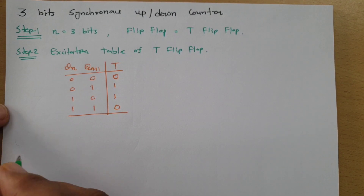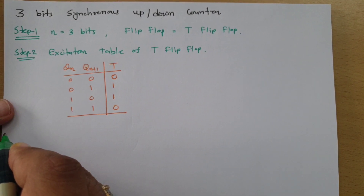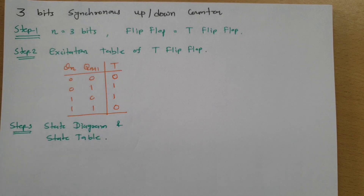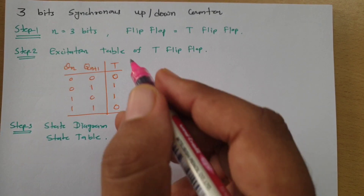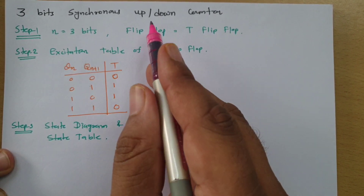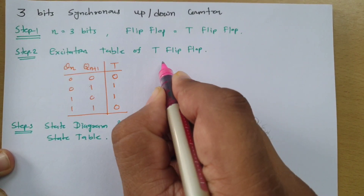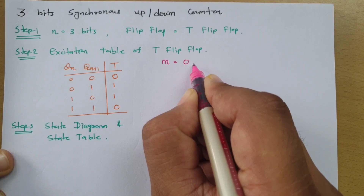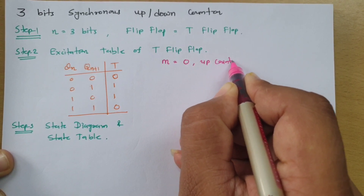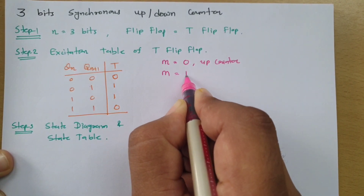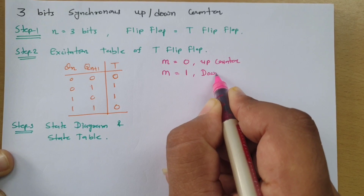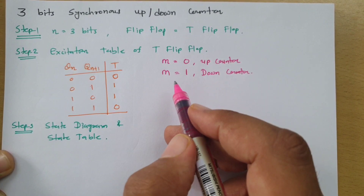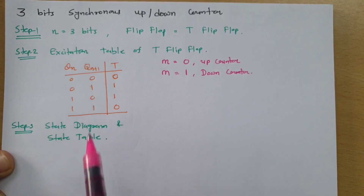In the next step, we need to draw the state diagram and state table. Since we are designing an up-down counter, we need one additional input — let us call it M. M equals 0 means up-counter, and M equals 1 means down-counter. So this is what we need to take care of.